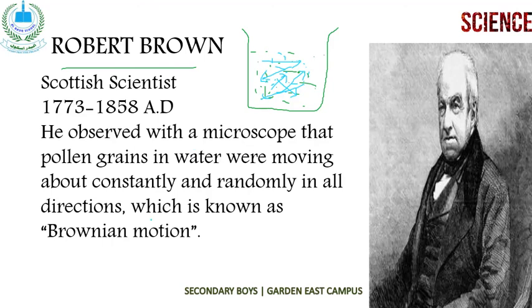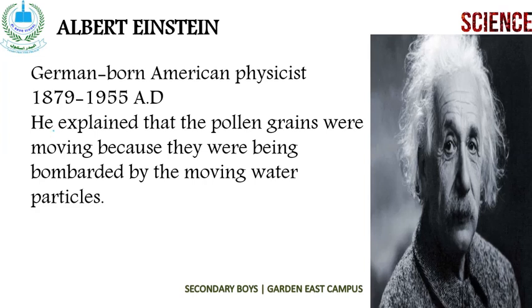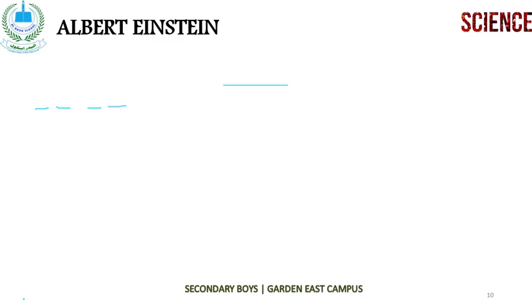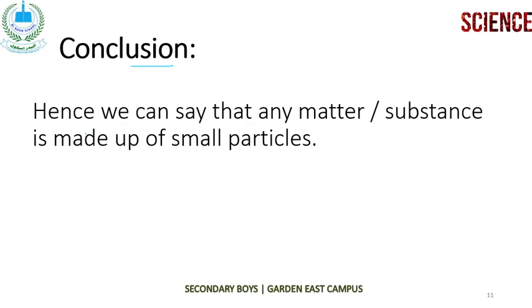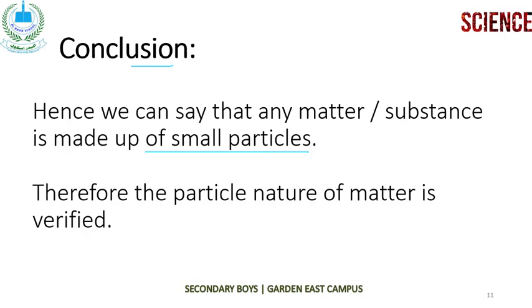The answer to why pollen grains move was given by Albert Einstein, a German-born American physicist who worked during 1879 to 1955 AD. He explained that the pollen grains were moving because they were being bombarded by the moving water particles. So the random motion of water particles causes the pollen grains to move, which confirms that any matter or substance is made up of small particles, and thus the particle nature of matter is verified.